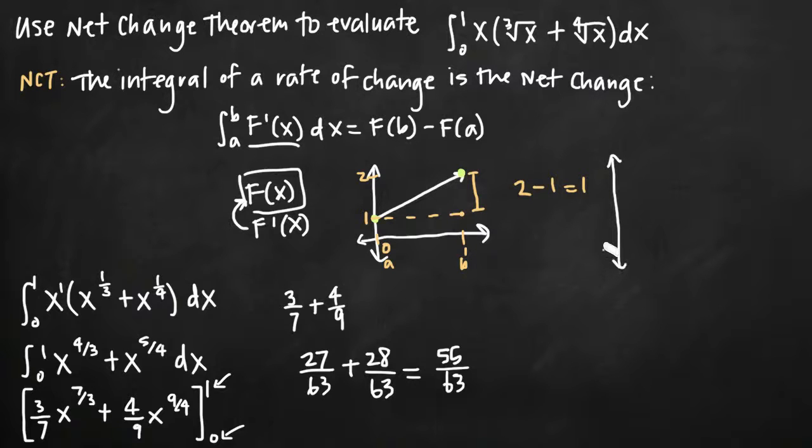So in other words, our function must have looked something like this. Without giving any detail to what the function itself looked like, the function went up by 55 over 63. So the value here at 1, if this is 1 and this is 0, because our limits of integration were 1 and 0. When we plugged in 1, we got 55 over 63. When we plugged in 0, we got 0, which is why this here is at the origin. So 55 over 63 minus 0 gives us 55 over 63, which is the net change, the difference between here and here, the net change in our function.